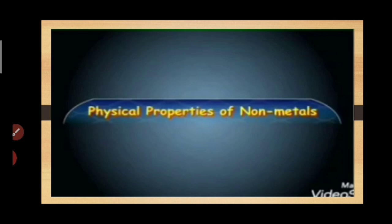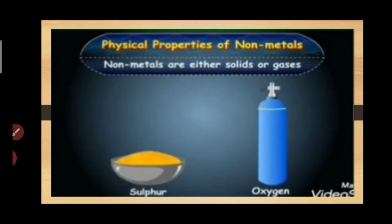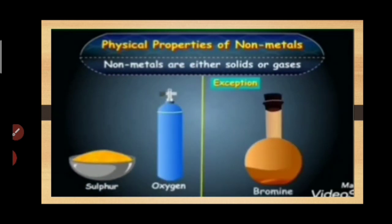Properties of Nonmetals. Nonmetals are either solids or gases. For example, sulphur is a solid nonmetal and oxygen is a gas. But bromine is the only liquid nonmetal present.